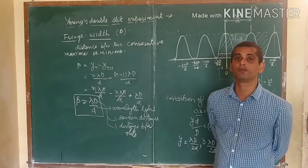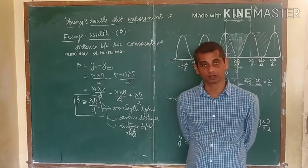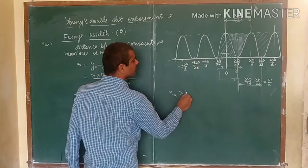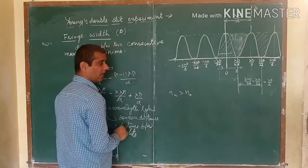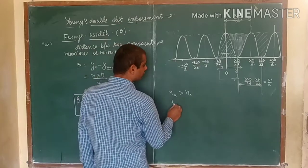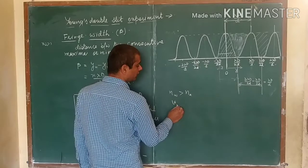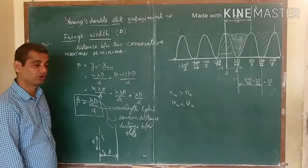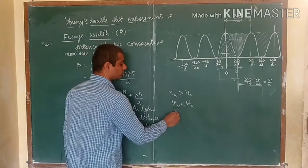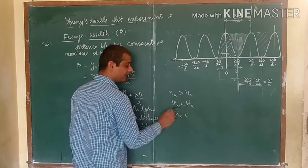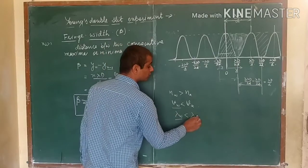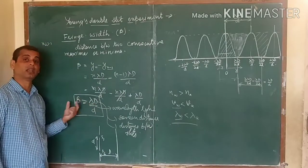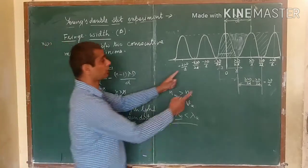For example, if you do Young's double slit experiment in water, naturally the refractive index in water is more compared to the refractive index of air. The velocity of light in water will be less compared to the velocity of light in air. Since velocity is related to wavelength, the wavelength of light in water will be less than in air. So wavelength decreases, and therefore you will have a smaller fringe width.